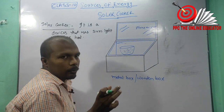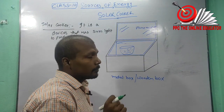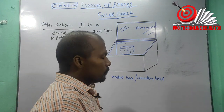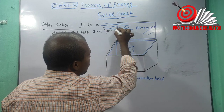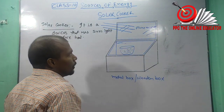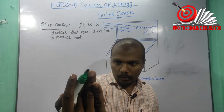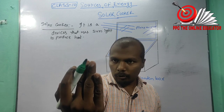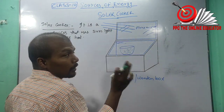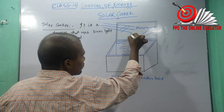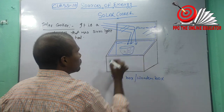This box is covered with a glass. When sunlight strikes the plane mirror, this plane mirror acts as a reflector — just like a mirror reflects our face, it reflects the sun rays towards the glass.